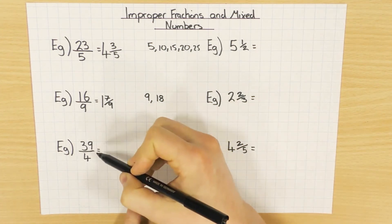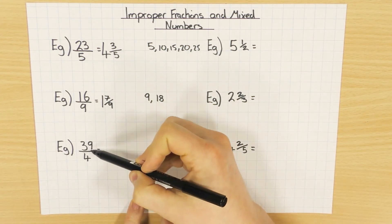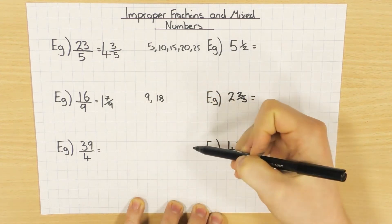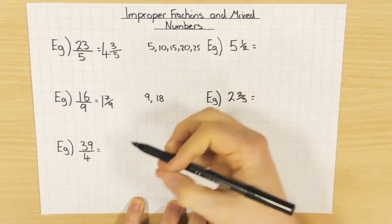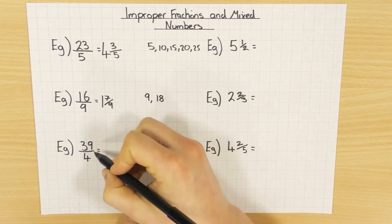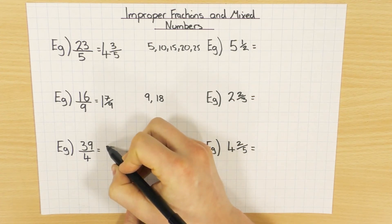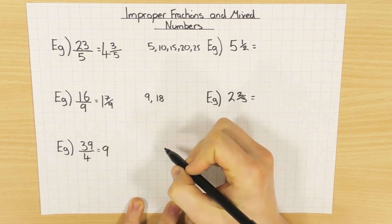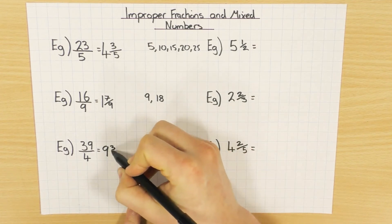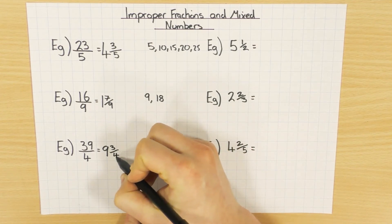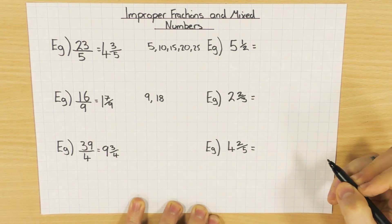Exactly the same with this one. How many 4's go into 39? So you can write out your 4 times table if you want to, but if you're good at your times tables, you can see that 4 goes into 39 nine times, and then what's left over? 3, and your denominator stays the same at 4.